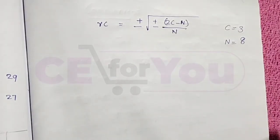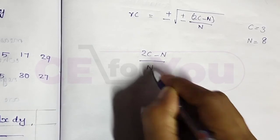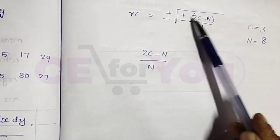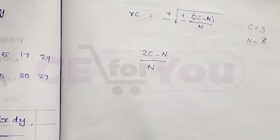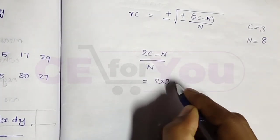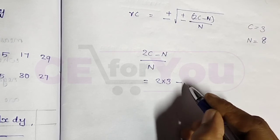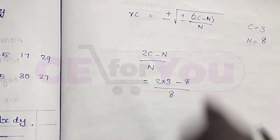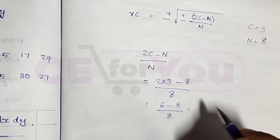Now we apply the Concurrent Deviation Method formula. 2c minus n divided by n: 2 into 3 minus 8, divided by 8. That gives 6 minus 8 divided by 8.